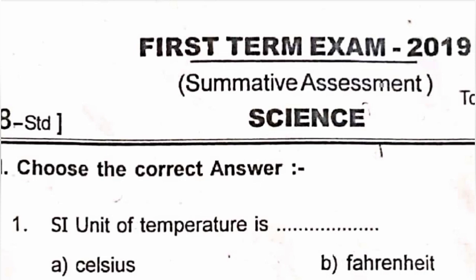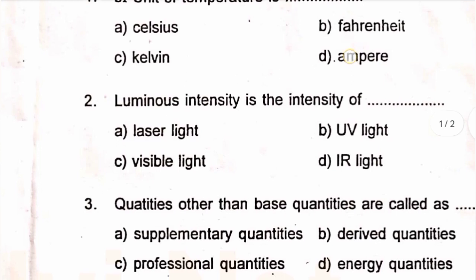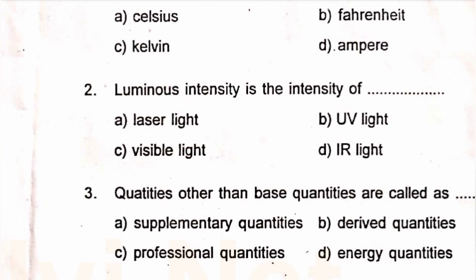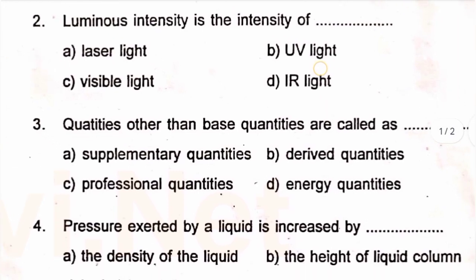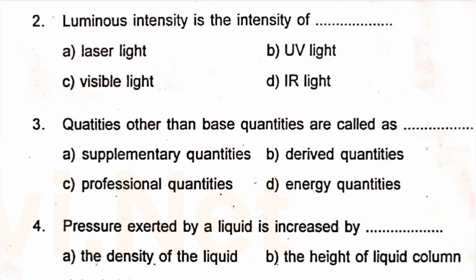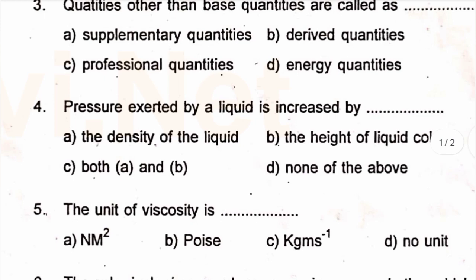Science Term 1. Choose the correct answer. First: SI unit of temperature is dash. Second: luminous intensity is the intensity of dash. Third: quantities other than base quantities are called as dash. Number 4: pressure exerted by a liquid is increased by dash. Number 5: the unit of viscosity is dash.